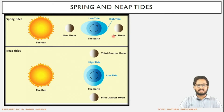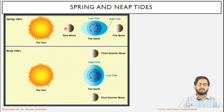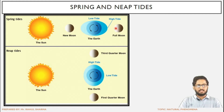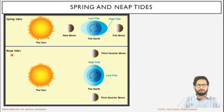Spring tides happen in two cases: full moon and new moon. In full moon, the full visible portion of the moon is facing us. In new moon, the moon is towards the sun so we are not able to see it. In both cases, the sun and moon are in the same line and spring tides — the tides of the highest height — are generated.